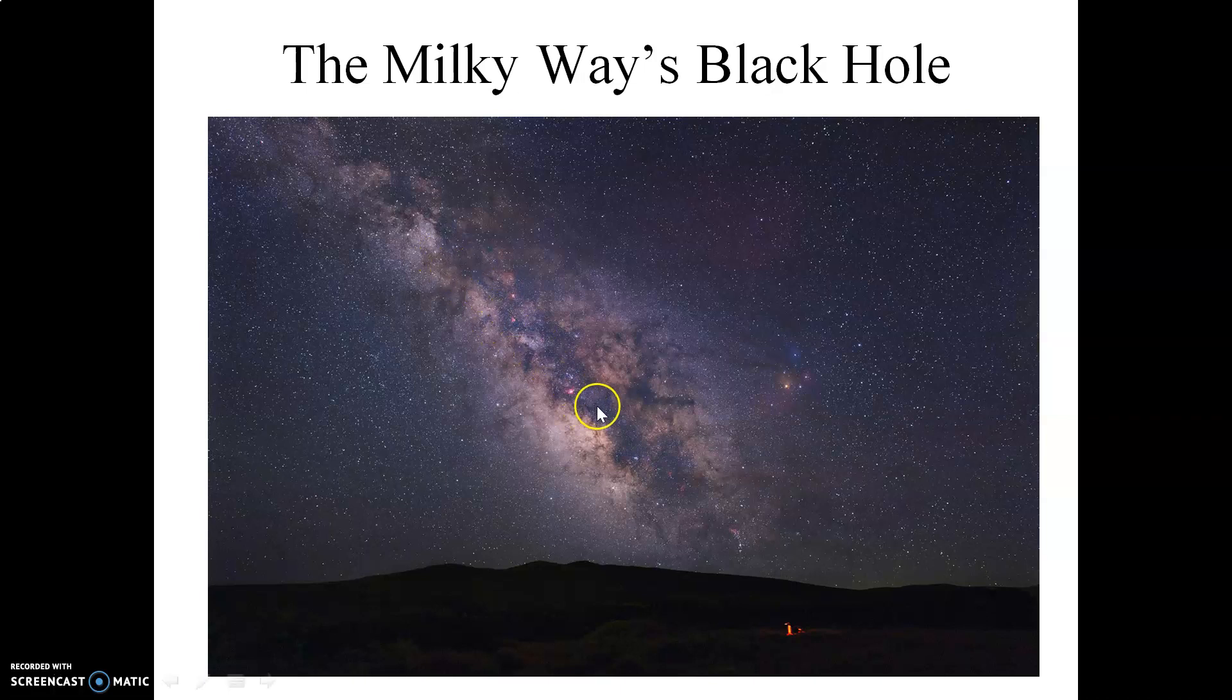However, this intervening material is transparent to other forms of light, primarily radio waves, X-rays, and infrared. So when we examine the galactic center using powerful telescopes, we use those forms of light instead.